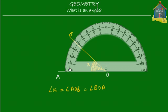Now let's read how many degrees are between OA and OB. There are 10, 20, 30, 35, 36, 37, and 38. So there are 38 degrees between OA and OB — this whole turning is equal to 38 degrees. So angle X is equal to 38 degrees. This little symbol on top of the number is the symbol for degrees.